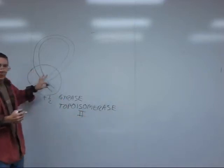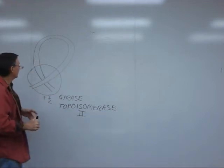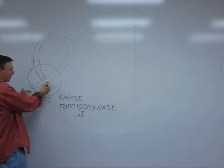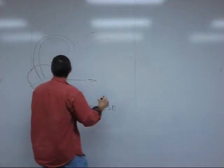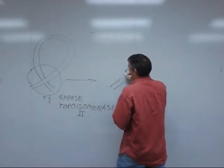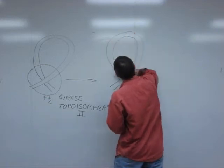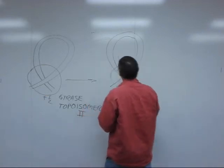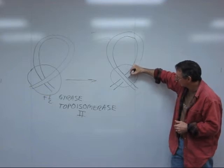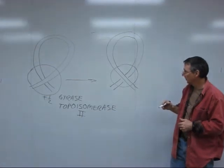Now, the way that it acts, it binds at a place like this, and it's going to hydrolyze phosphodiester bonds in the front part of the molecule in this twist. It looks something like this. So gyrase has hydrolyzed the phosphodiester bonds in both strands of the front part of the molecule. Now you can see the back part of the molecule through that gap.